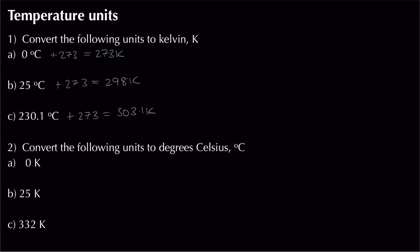For the next three, we convert from Kelvin to degrees Celsius by subtracting 273. For 0 K, we get −273°C. Subtracting 273 from the next gives −248°C, and the final one gives 59°C. All we're doing is adding or subtracting 273 to convert between units.